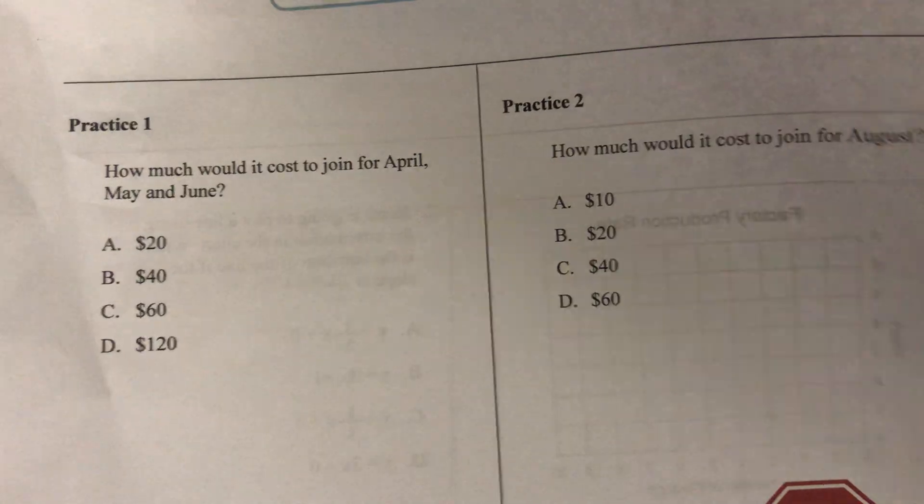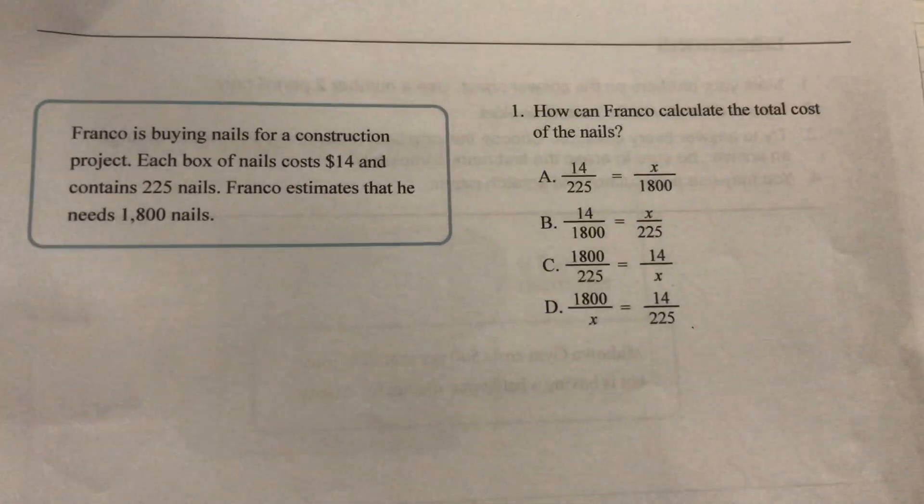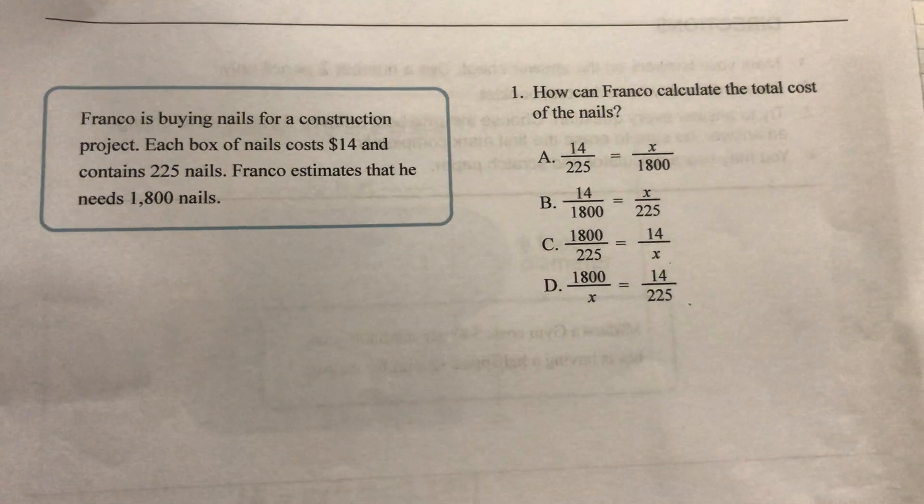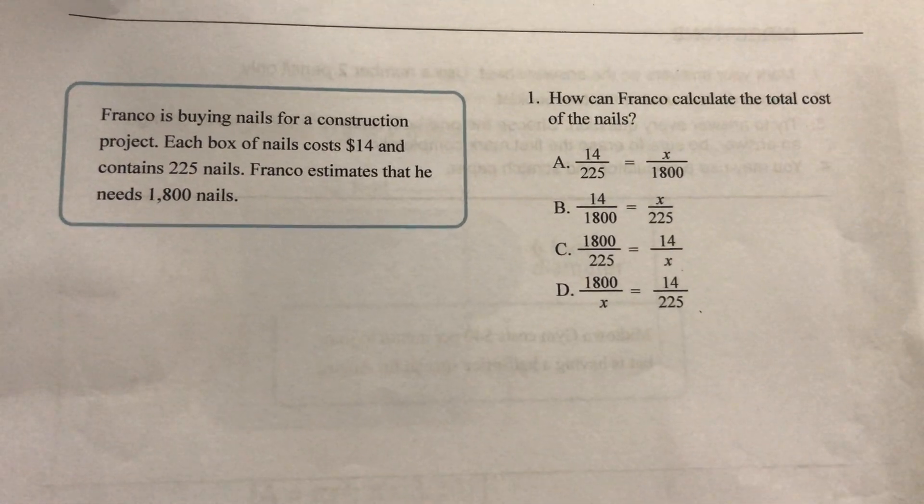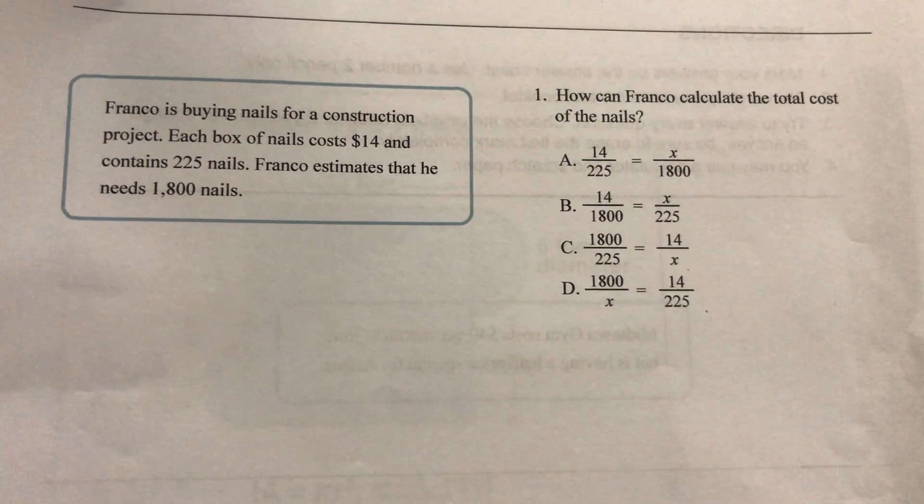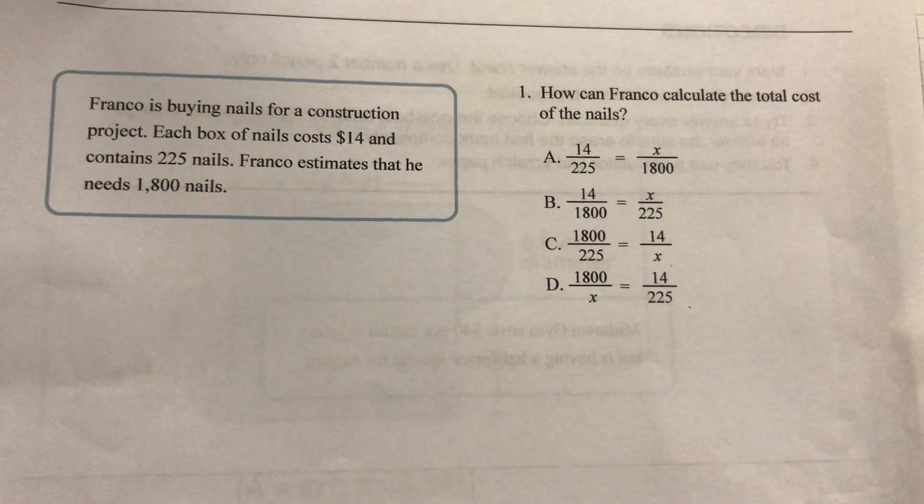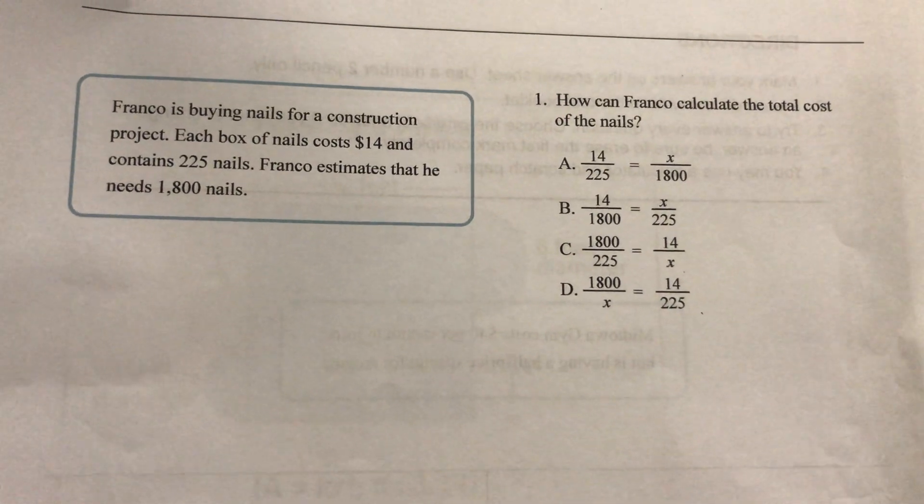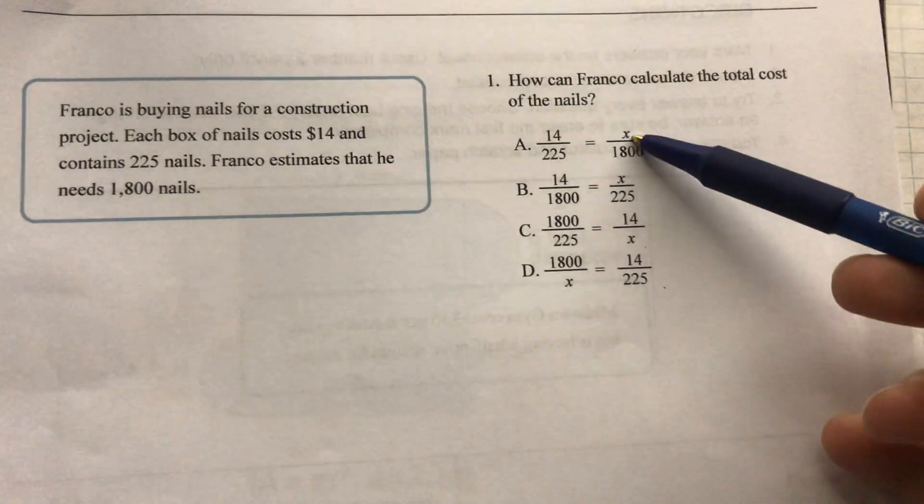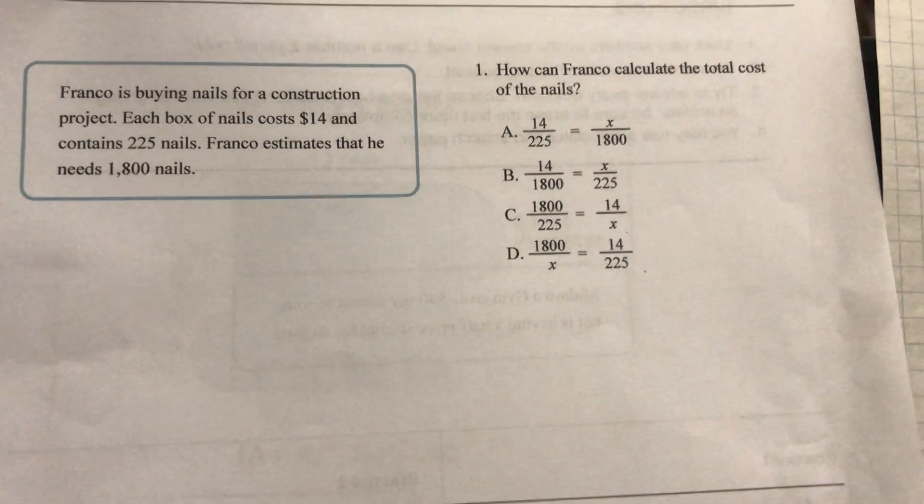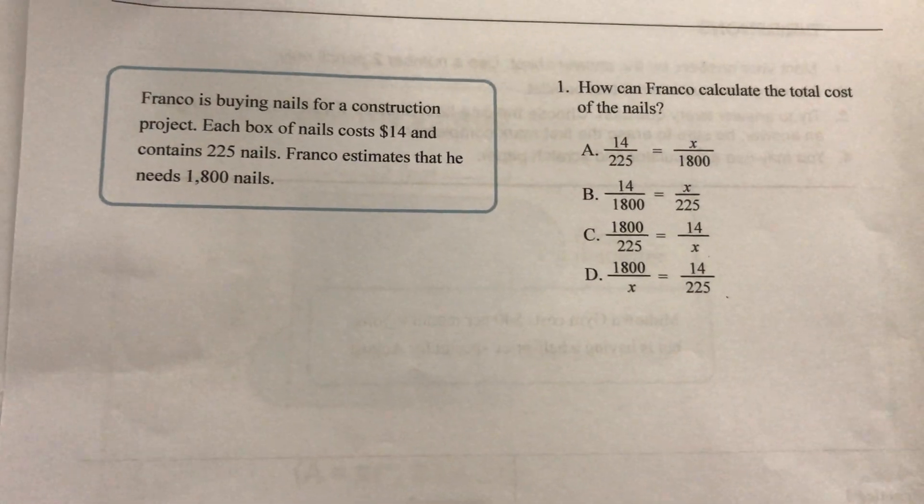Okay let's take a look at something a little bit more difficult. So these are the true level D questions, these are ratios and proportions. Franco is buying nails for a construction project. Each box of nails costs $14 and contains 225 nails. Franco estimates he needs 1,800 nails. How can Franco calculate the total cost of nails? So I'm not going to find the answer in this problem. I have to choose which set of proportions, ratios, I'm going to use to answer the problem. A, B, C, or D. So pause the video and answer the question.